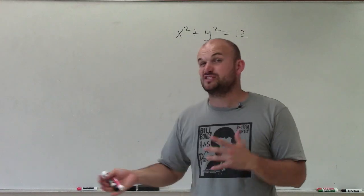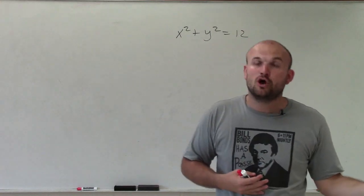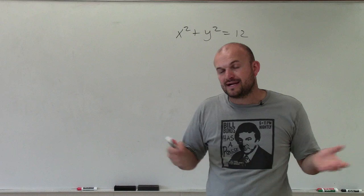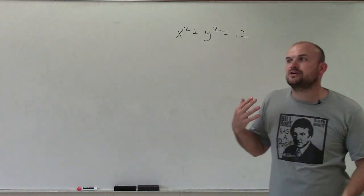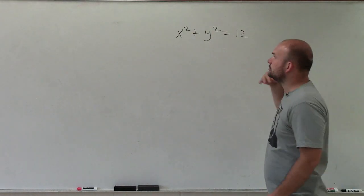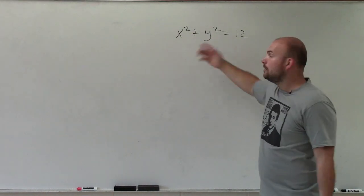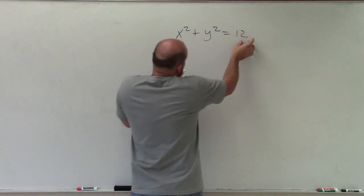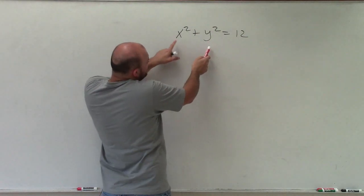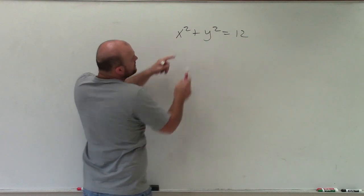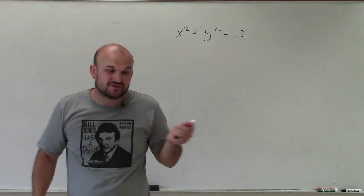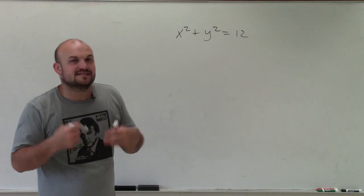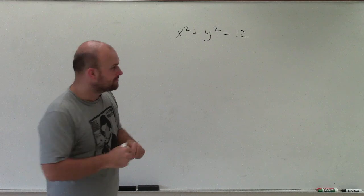Ellipses, technically, are going to have vertices and covertices, meaning we're going to have one major axis and one minor axis. That is all dependent on what is your larger number divided by. So if I want to set this equal, I'll divide by 12 on both sides. What you'll notice is 12 will be the same number under x squared and y squared. So therefore, this represents the equation of a circle.